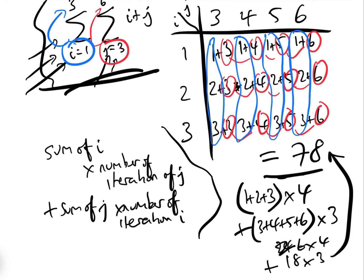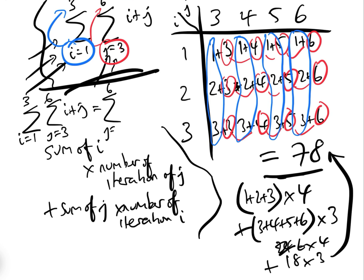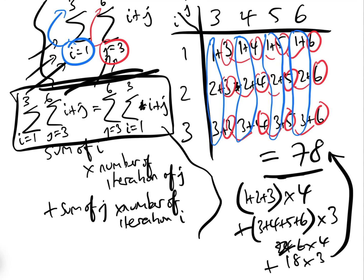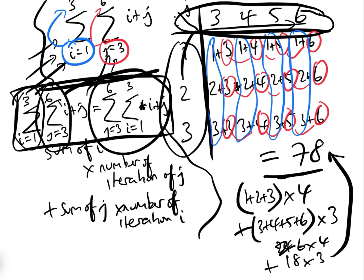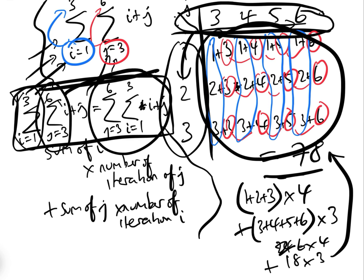One other interesting thing: the sum from i equals one to three and j equals three to six of i plus j is exactly the same as if we flip the sums — j equals three to six on the outside and i equals one to three on the inside. It's not always the case that you can do this, but for these types you can, because either way the sum of all the entries in the table is going to be exactly the same. It doesn't matter which way round you do it.